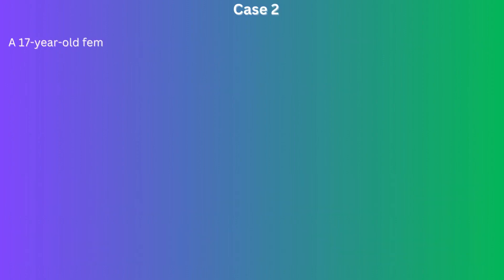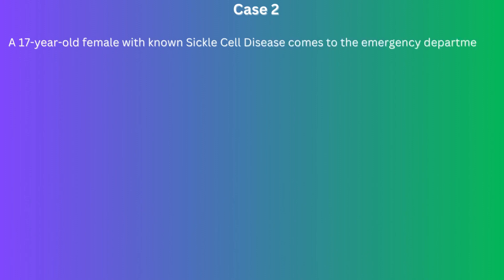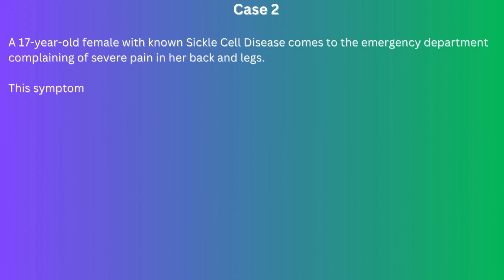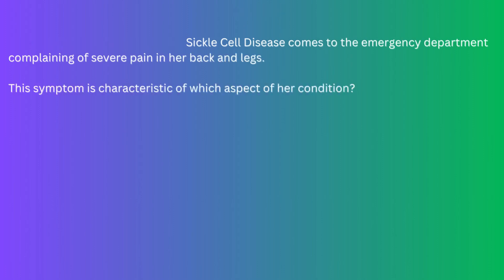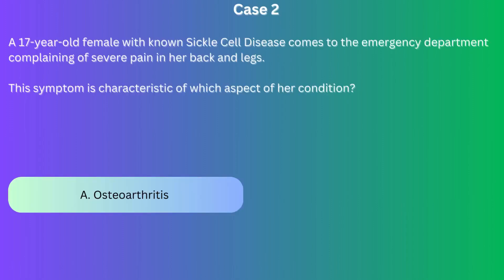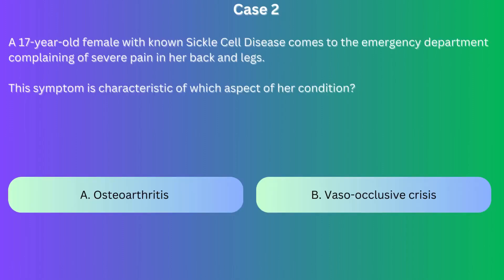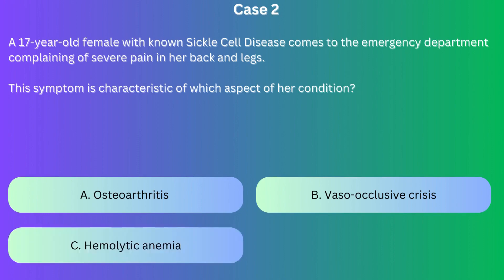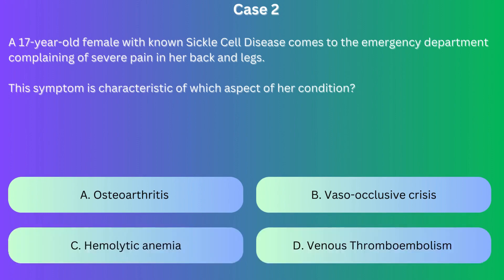Case number 2. A 17-year-old female with known sickle cell disease comes to the emergency department complaining of severe pain in her back and legs. This symptom is characteristic of which aspect of her condition? A. Osteoarthritis. B. Vaso-occlusive crisis. C. Hemolytic anemia. D. Venous thromboembolism.